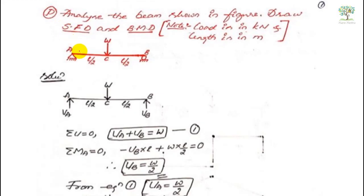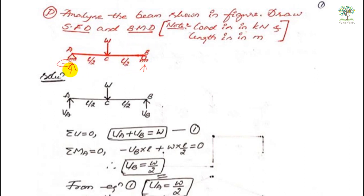Let us go with a simple example: a simply supported beam subjected to a point load at the center. First we have to write down the reactions. At the hinge support we get two reactions — one vertical and one horizontal. At the roller support we get only one vertical reaction. Since there is no horizontal load, we neglect the horizontal reaction. Here is the free body diagram of the beam.